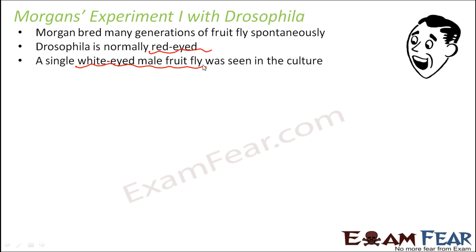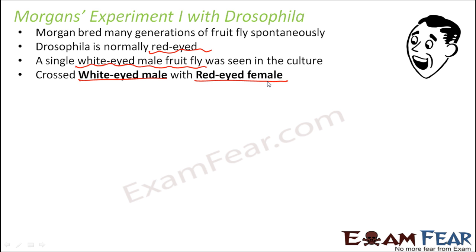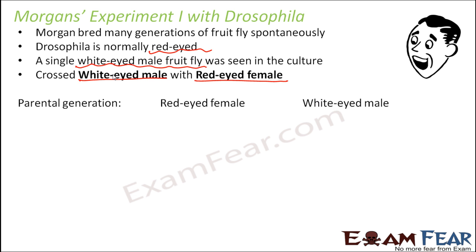So what he did was cross this white-eyed male with a red-eyed female. The unique white-eyed male he had found was crossed with a normal red-eyed female. So the parental generation here was a red-eyed female crossed with a white-eyed male.